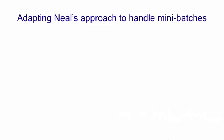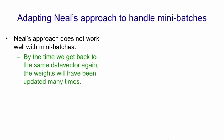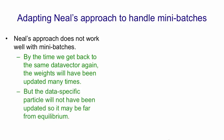However, it's difficult to apply this approach to mini-batches. The reason is that by the time we get back to the same data vector if we're using mini-batch learning, the weights will have been updated many times. So the stored data-specific particle for that data vector won't be anywhere near thermal equilibrium anymore. The hidden units won't be in thermal equilibrium with the visible units of the particle given the new weights, and again we don't know how long we're going to have to run for before we get close to equilibrium again.